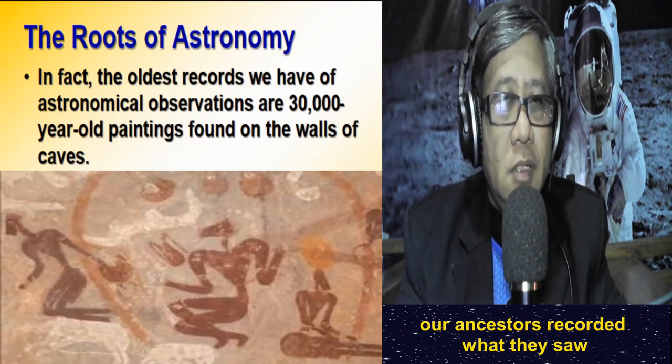Here is an example of an ancient cave painting made by our prehistoric ancestors. We have a painting of a prehistoric ox or cattle, and in the background you will notice dots. Probably those dots represent constellations — patterns of stars in the night sky — and our ancestors were so fascinated by them that they made these cave paintings.